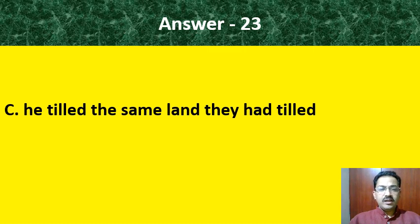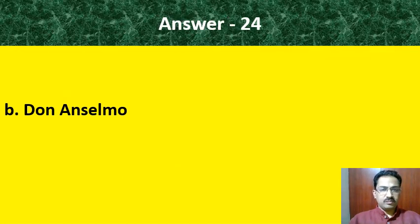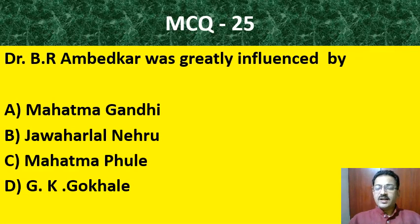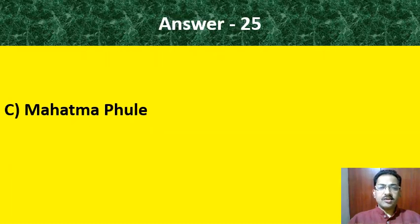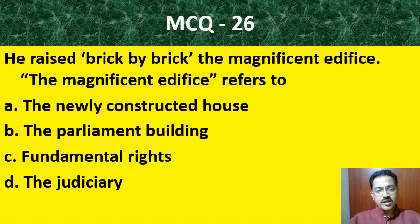MCQ question number 22: The young man who accompanied the old man had eyes like — clear sky, fish, gazelle, or lotus. Option C is the correct answer: gazelle. MCQ question number 23: The old man was a farmer — the proof from the options: he allowed his people, he planted trees for children, he tilled the same land they had tilled, he allowed trees and plants. The correct answer is: he tilled the same land they had tilled.